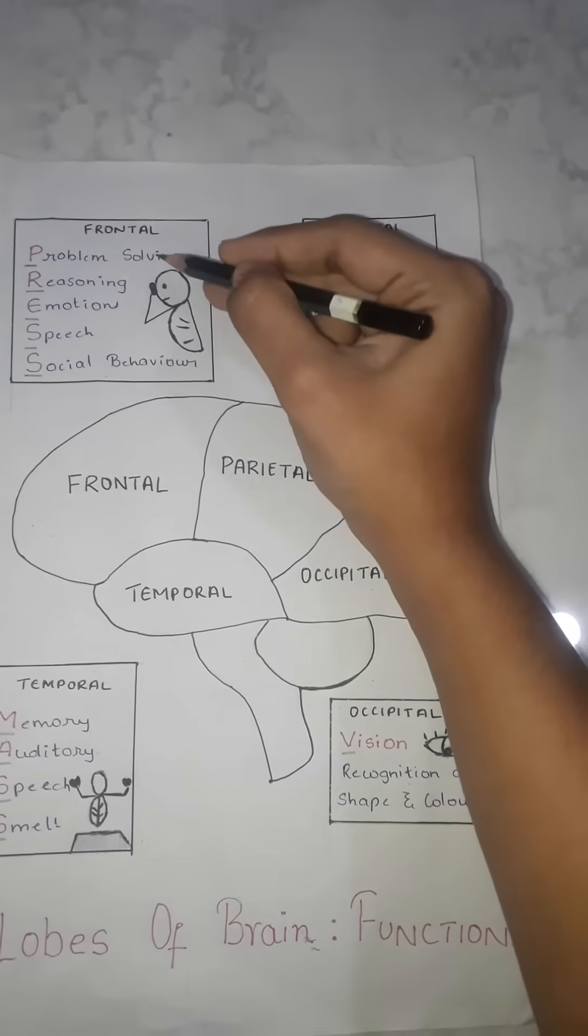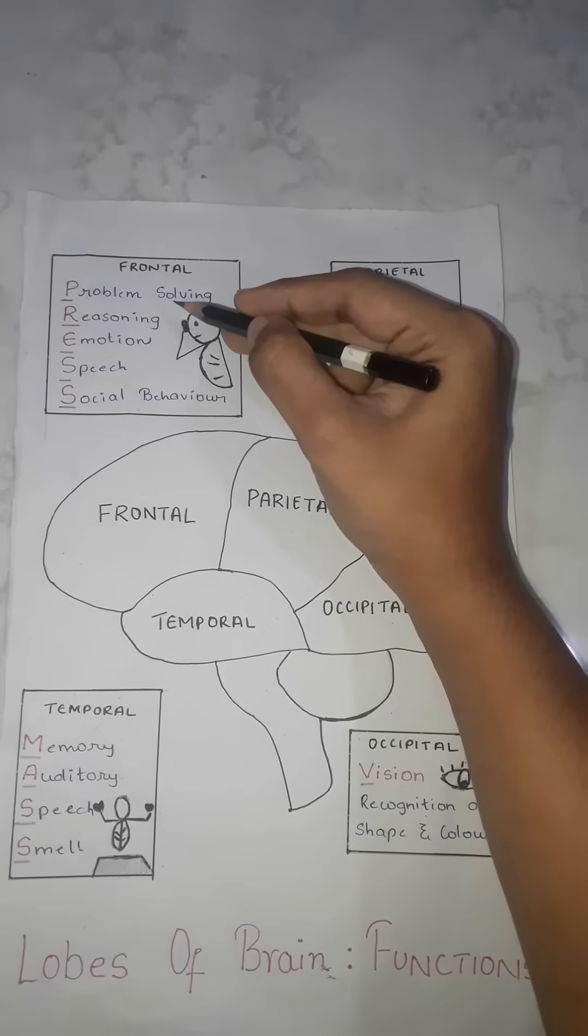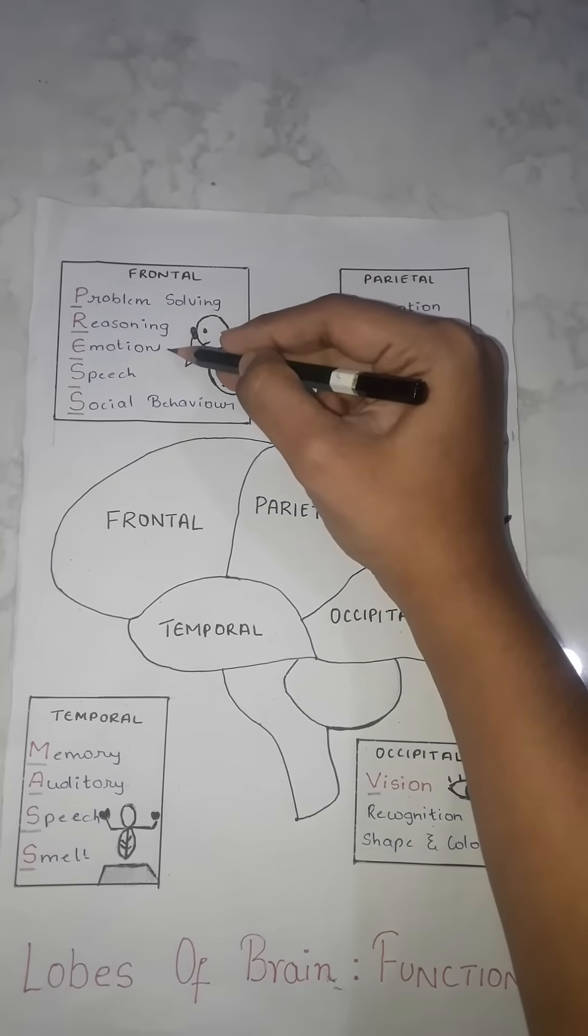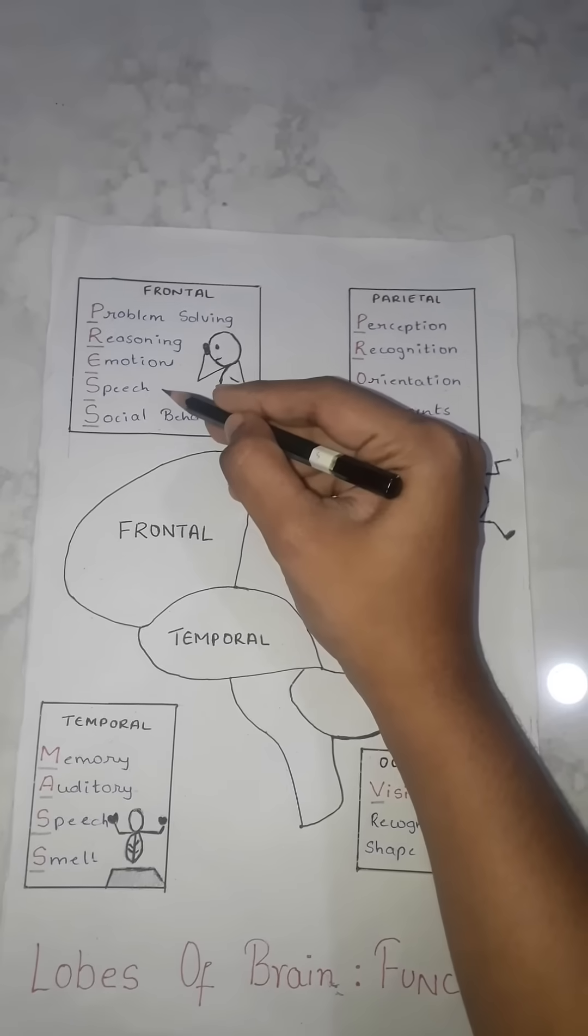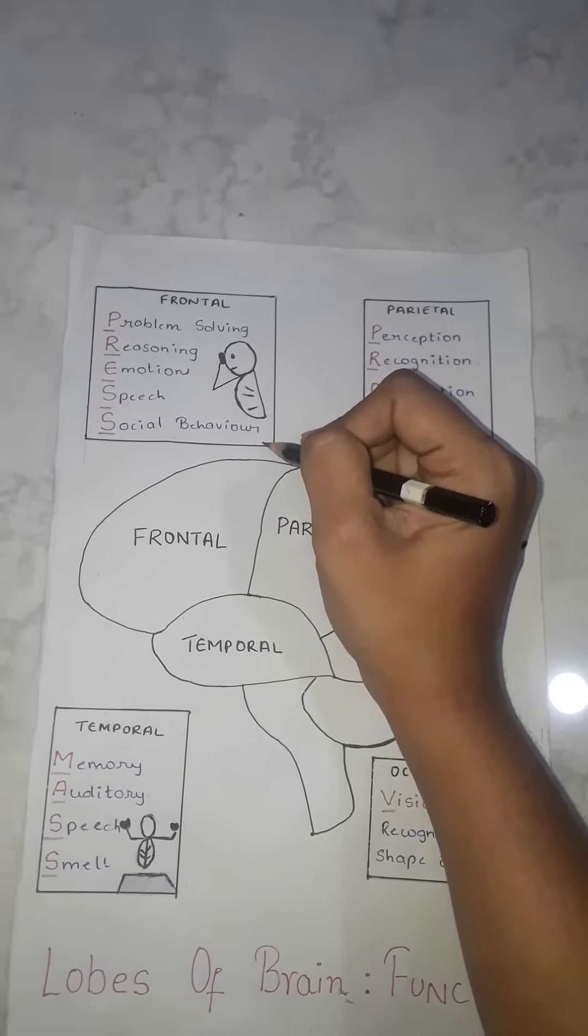So he has a problem, so problem solving, you need to reason out, so reasoning, emotions, you need to speak out, so speech and then finally social behavior.